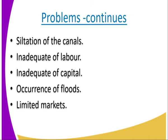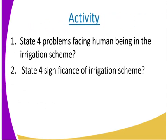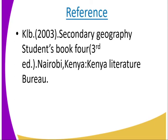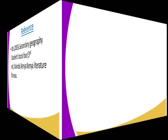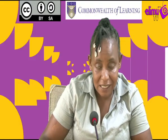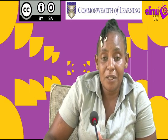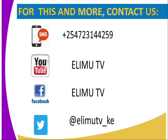Then we have limited markets. For example, the Perkerra irrigation scheme is in a sparsely populated area, so no ready market is available. That marks the end of our lesson. The activity: state four problems facing human beings in irrigation schemes, and state four significance of irrigation schemes. Reference: visit the KNB 2003 Secondary Geography student book, third edition. For more information, contact us via SMS, YouTube, Facebook, or Twitter. Stay tuned to RIM TV. Thank you.